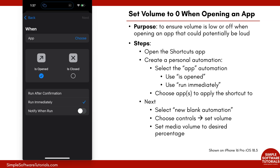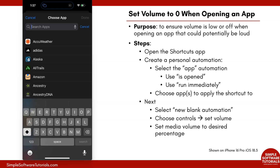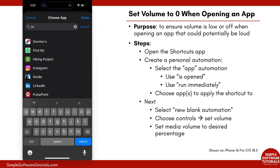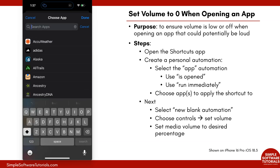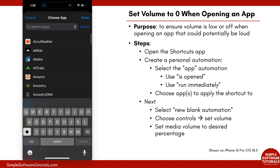This is where we're going to choose which apps we want this to apply to. You can search up here — say we want this to apply to Facebook and also Instagram. You can also just scroll through and find something, but searching works just as well. Once you've selected your apps, tap on Done.